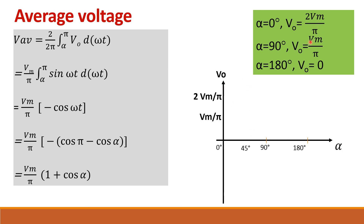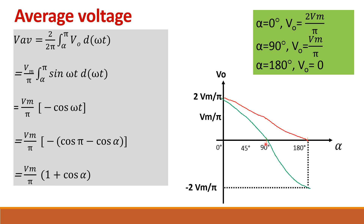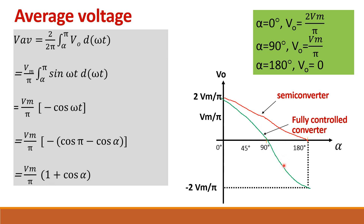The result is: V_naught equals (Vm/pi)(1 + cos alpha). At alpha equals zero, V_naught is 2Vm/pi; at alpha equals 180 degrees it becomes zero. The fully controlled converter (shown in green) can produce output from plus 2Vm/pi down to minus 2Vm/pi, enabling both rectifier and inverter operation. The semi-converter, for firing angles from 0 to 180 degrees, produces only positive output voltage varying from 2Vm/pi down to zero.